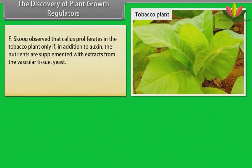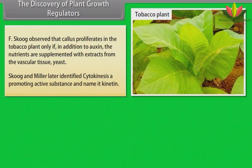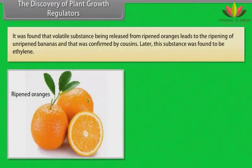F. Skoog observed that callus proliferates in the tobacco plant only if, in addition to auxin, the nutrients are supplemented with extracts from vascular tissue or yeast. F. Skoog and Miller later identified a promoting active substance and named it kinetin. Three independent workers reported three different kinds of inhibitors in plants — inhibitor B, abscission-2 and dormin. Later, all three inhibitors proved to be chemically identical and were named abscisic acid (ABA). It was found that a volatile substance released from ripened oranges leads to the ripening of unripened bananas, as confirmed by Cousins. Later, this substance was found to be ethylene.